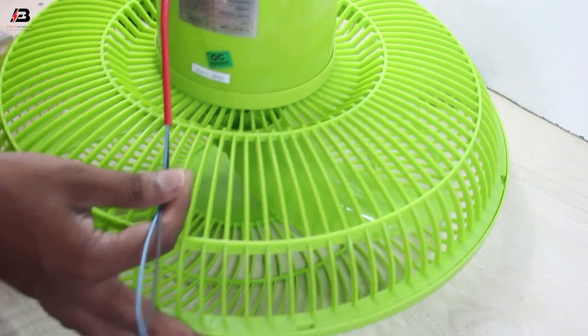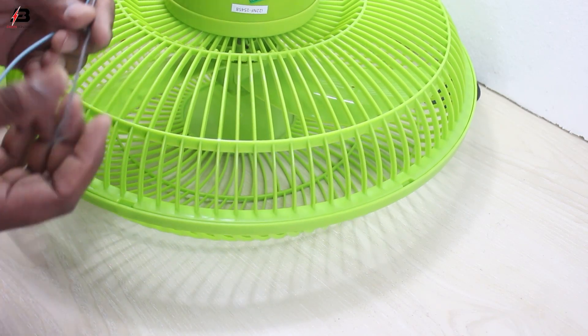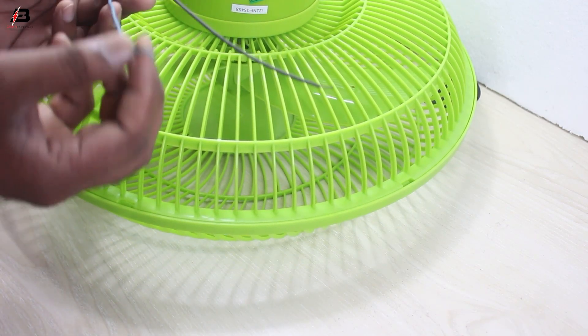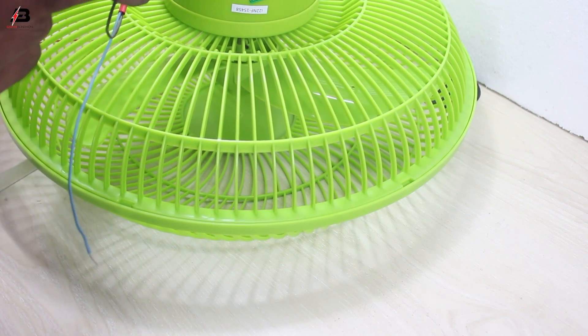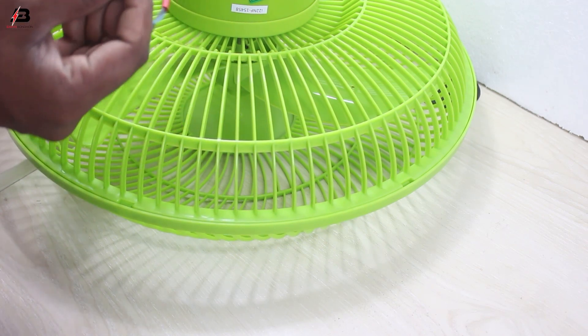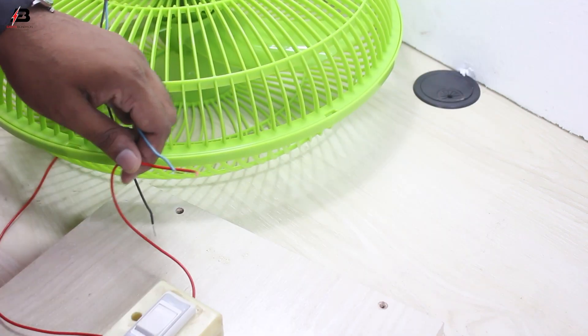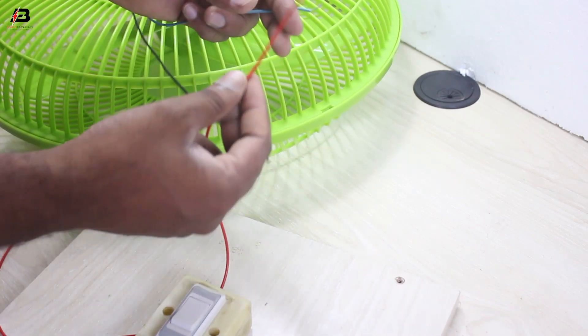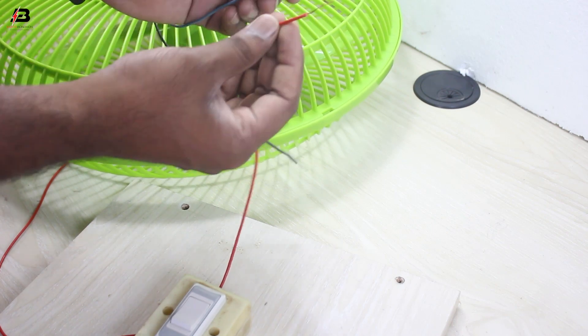Here are two wires from the fan—one is phase connection and one is neutral connection. We connect the neutral wire directly to source and connect the phase wire to the switch connection. Check that the load wire from the switch is connected to the fan phase connection.